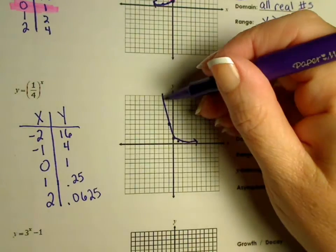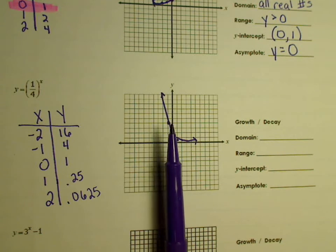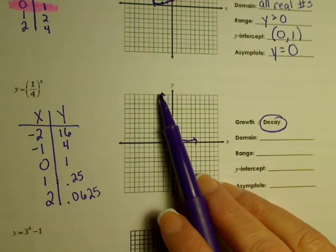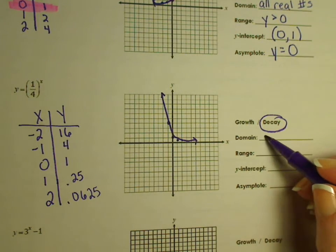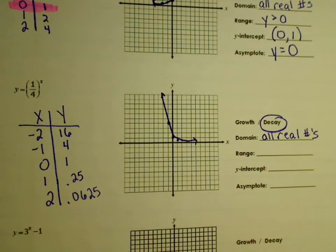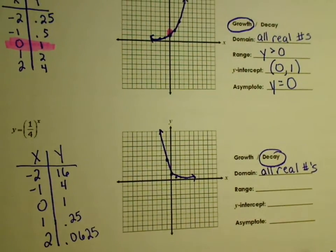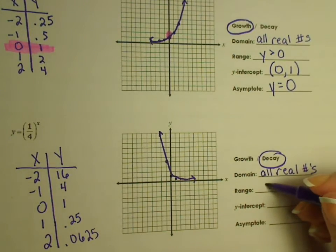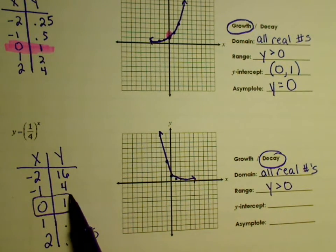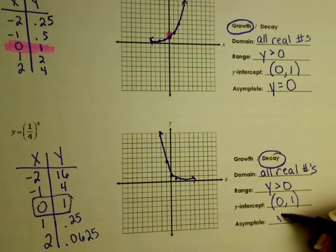Let's look at it. We're starting over here, and reading from left to right, over time this is going down. If it goes down from left to right, that is called decay. The domain keeps going up and out and keeps going the other way, so your domain is all real numbers. The range — just like before, it doesn't touch 0 but it's everything above it — so it's y is greater than 0. This also happened to have a y-intercept at (0, 1), and the asymptote is also y equals 0.